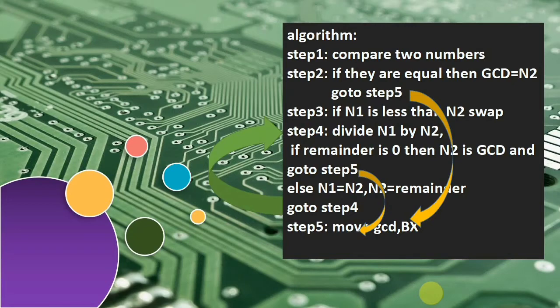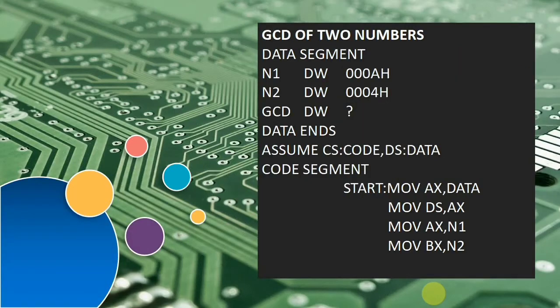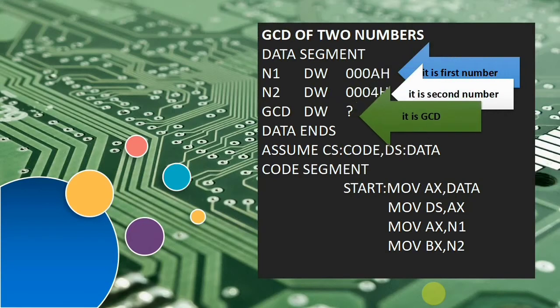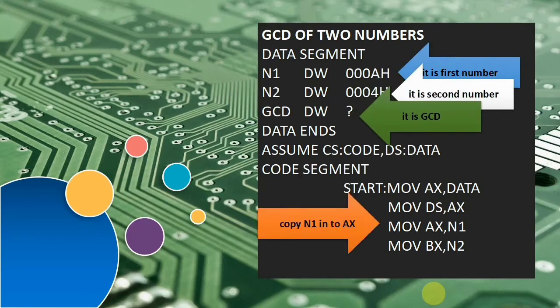Now we will see the program. This is the program to find the GCD of two numbers. Here you can see we have taken three memory operands: N1, N2, and GCD. N1 is number ten, N2 is number four. We need to find the GCD of ten and four, and the result is stored in the memory operand GCD.